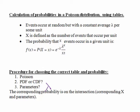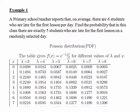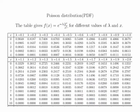Let's have a look at a few examples to see how this works in practice. In our first example, a primary school teacher reports that on average there are 6 students who are late for the first lesson per day. So our parameter lambda is 6. We want to find the probability that in this class there are exactly 5 students who are late for the first lesson on a randomly selected day.